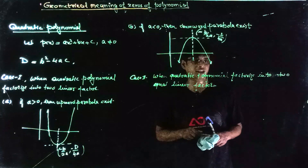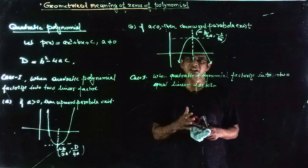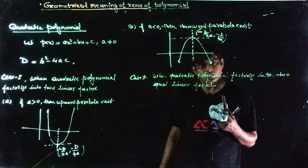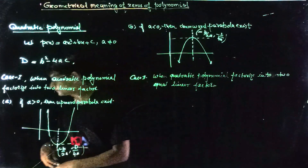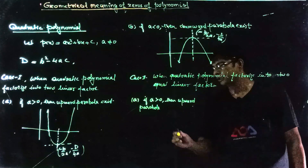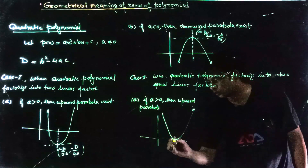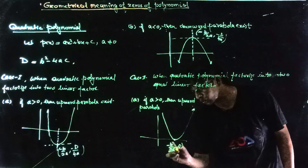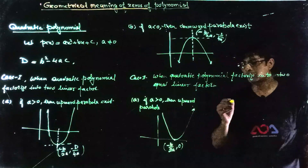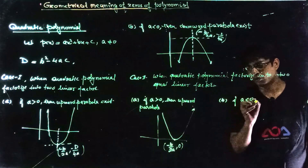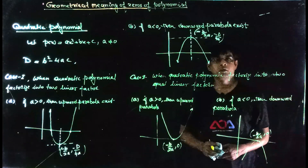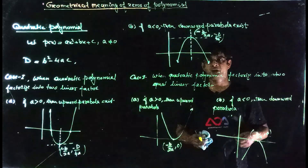Case 2: When a quadratic polynomial factorizes into two equal linear factors. In this case, the two zeros are equal to each other. Two sub-cases: if a > 0, then an upward parabola exists; the graph touches the x-axis at exactly one point. Vertex coordinates: (-b/2a, 0), so the roots are both equal to -b/2a. Second sub-case: if a < 0, then a downward parabola exists; vertex coordinates: (-b/2a, 0). The concept is easy and straightforward.